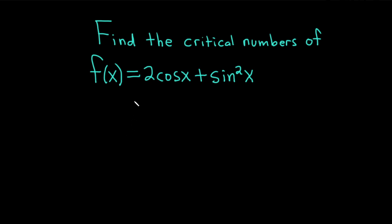Hello, in this video we're going to do an example of finding critical numbers. The question says to find the critical numbers of f of x equals 2 times the cosine of x plus the sine squared of x. Let's go ahead and work through it.